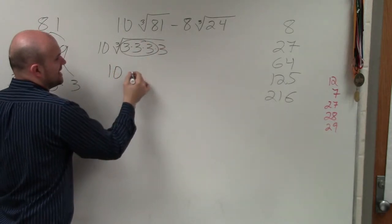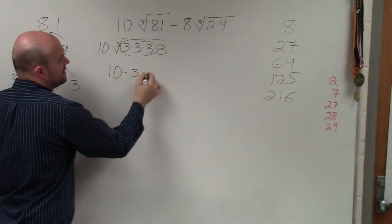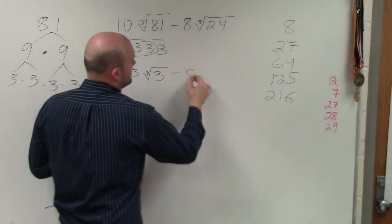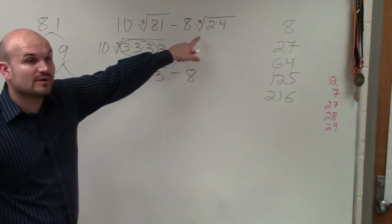So therefore, this simplifies to 10 times 3 cube root 3 minus 8. Now I can simplify 24.